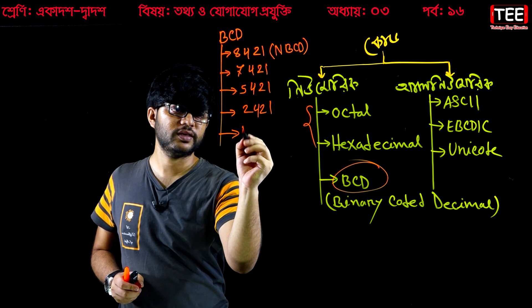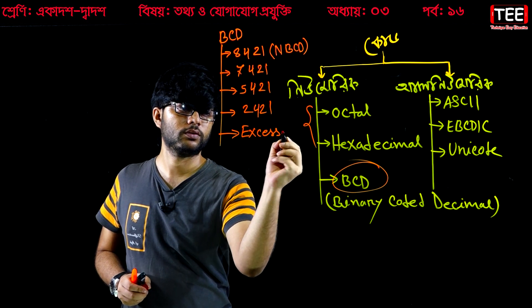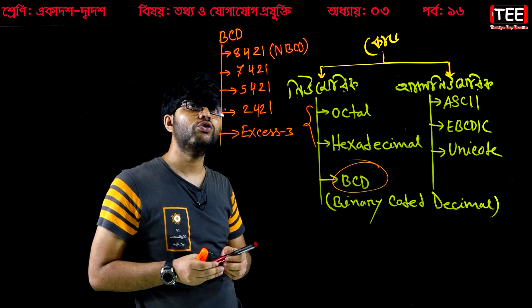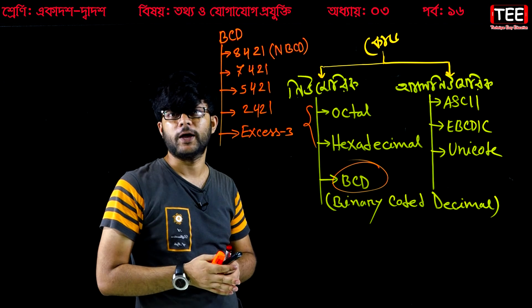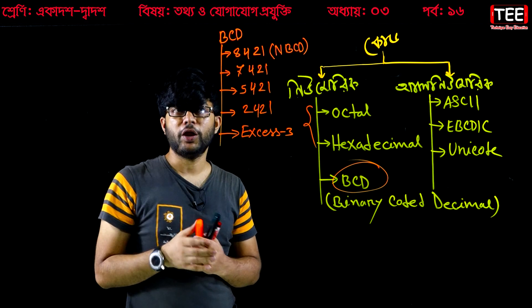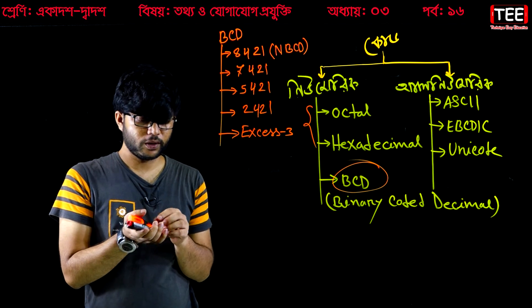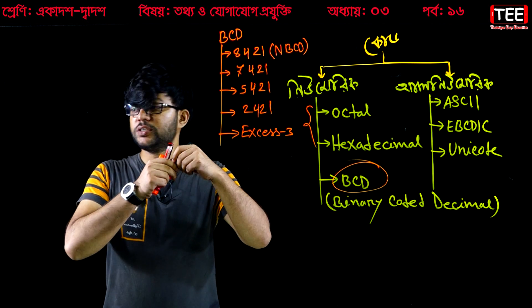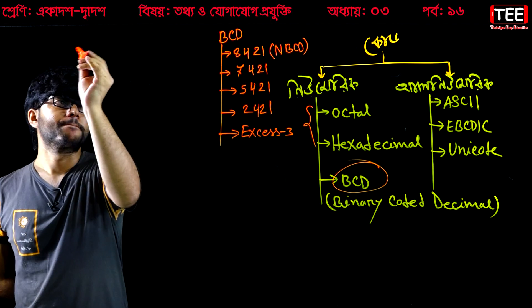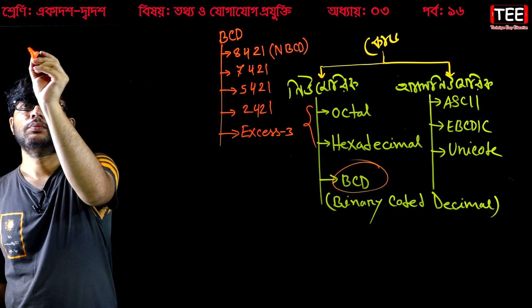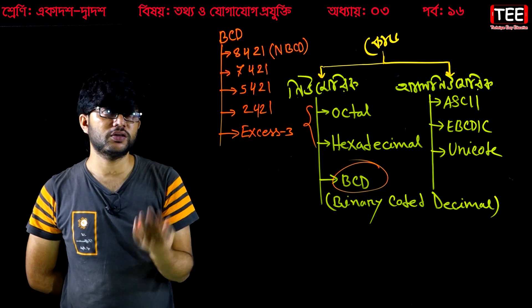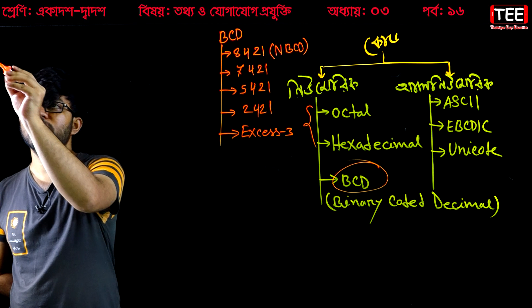What are the rules with BCD? Let me tell you the numbers. In BCD, we represent each decimal digit using 4-bit binary. Each decimal digit is defined and represented in 4-bit binary format.